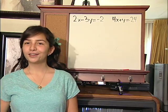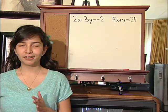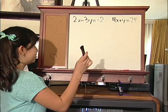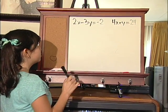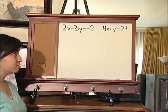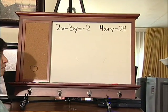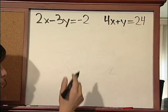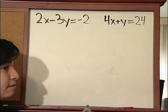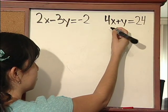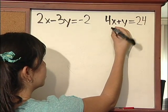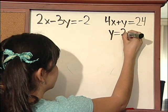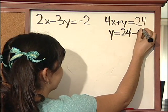The first way to solve a system of equations is by using substitution. We have two equations here: 2x minus 3y equals negative 2, and 4x plus y equals 24. First, we're going to use the second equation and solve for y. So y equals 24 minus 4x.